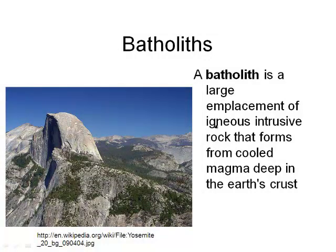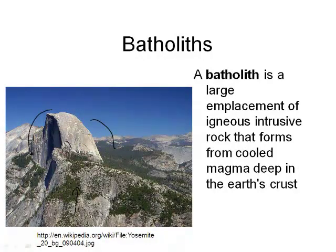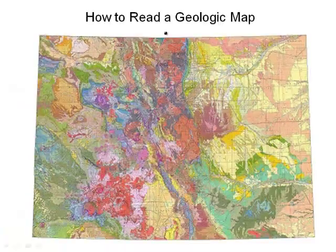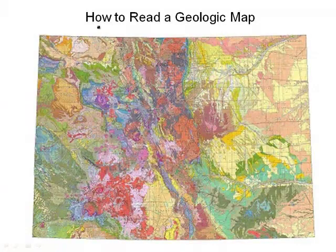And the batholith — the last word. We've talked about this before; Pikes Peak is a batholith. It's a large emplacement of igneous intrusive rock that forms from cooled magma deep in the Earth's crust and then gets pushed up. This is Half Dome in Yosemite — all eroded away. It's like rock climber paradise.